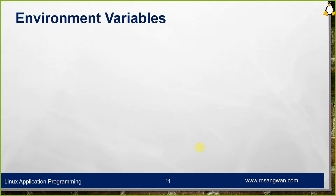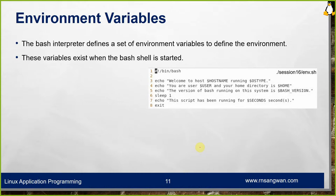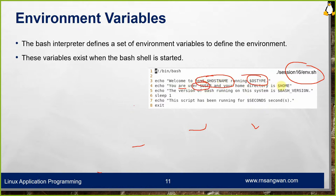Environment variables are defined by the bash interpreter to describe the environment. These variables exist when the bash shell starts. Examples include HOSTNAME (the server name), OSTYPE, USER (your username), HOME (your home directory), and SECONDS (how long the script has been running). These are all examples of environment variables you will see when running a script.